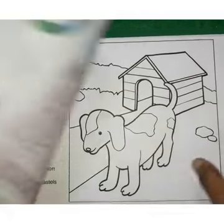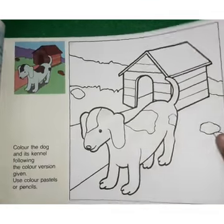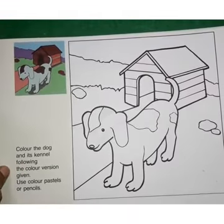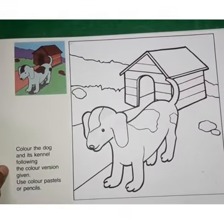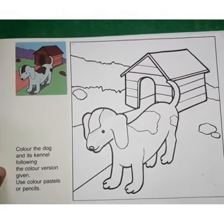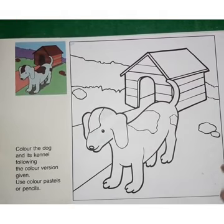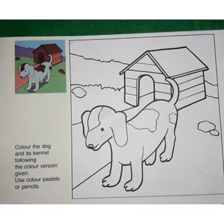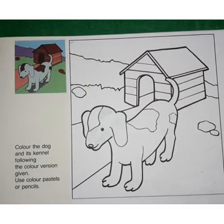Now children, take your coloring book and take the page number 5. Color the dog and its kennel following the color version given. Use color pastels or pencils.